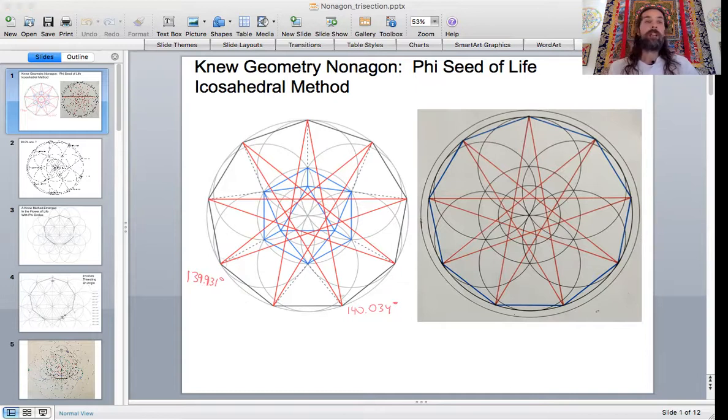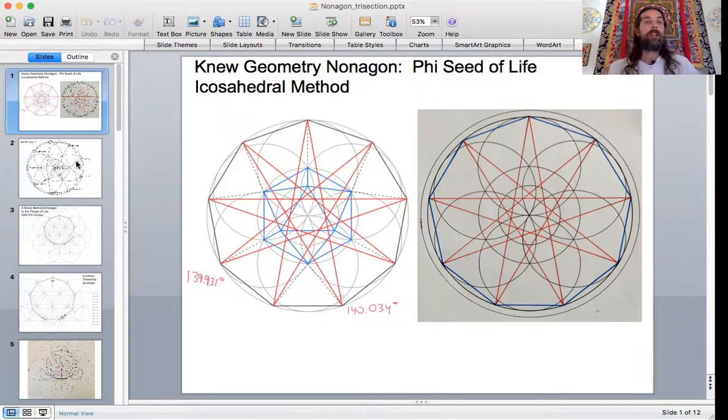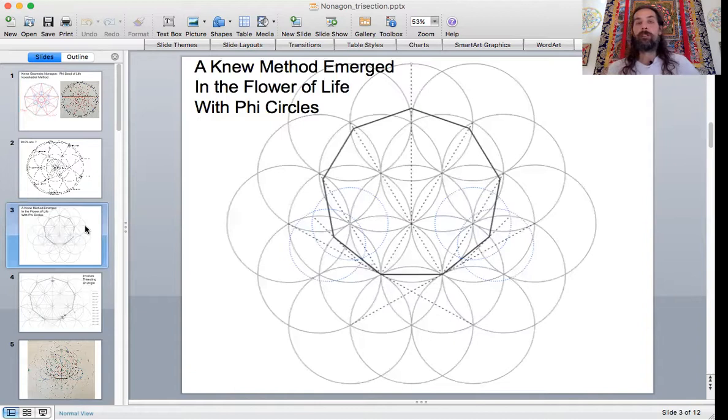it just happened to create an excellent nonagon with internal angle of 140.04, and the other angle over here, 139.931. And I thought that was pretty great by the end of the week, and I checked out the angles in GeoGebra. I figured it was about 99.9% accurate here. And this week I was just kind of looking at something else in relationship to the golden hexagon, which I'm going to talk about in just a little bit, but a whole new method emerged in the flower of life that still includes those phi circles.